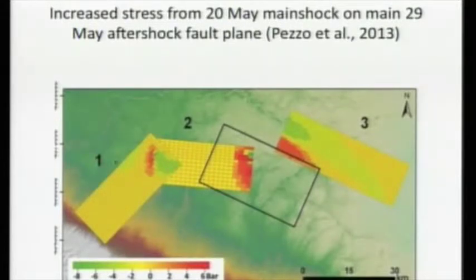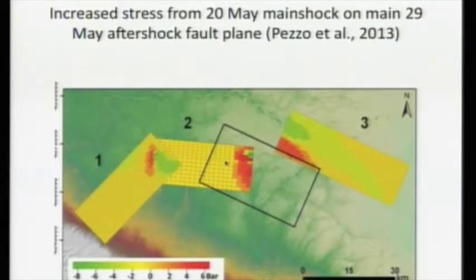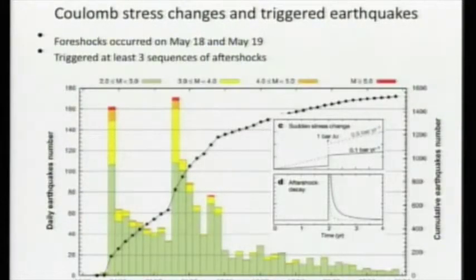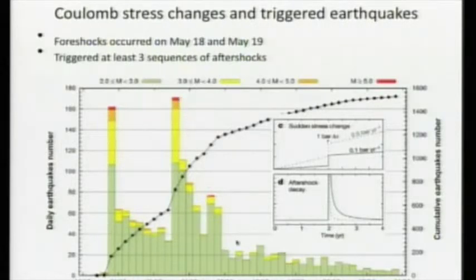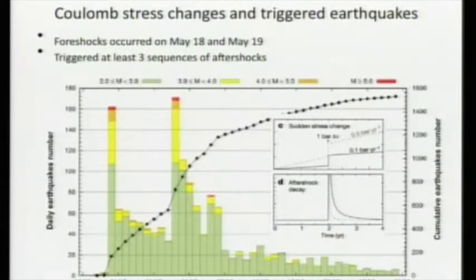When the May 20th event happened, it made very strong perturbations to the state of stress. There's a very nice result by Pezzo et al. showing the stress changes on the fault plane of the May 29th earthquake caused by the displacement from the May 20th earthquake — the changes here are up around six bars, so they're quite large. The daily number of earthquakes shows the May 19th foreshock, the May 20th main shock, activity jumping up then dying back down, the May 29th aftershock with activity jumping up and dying down. This system behaves exactly as we expect from our understandings of Coulomb stress changes in tectonic environments.